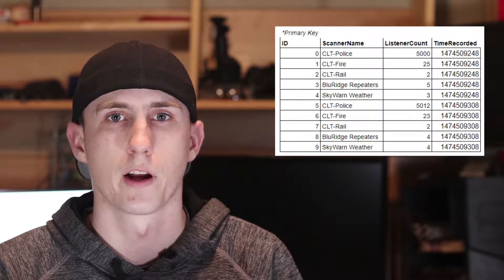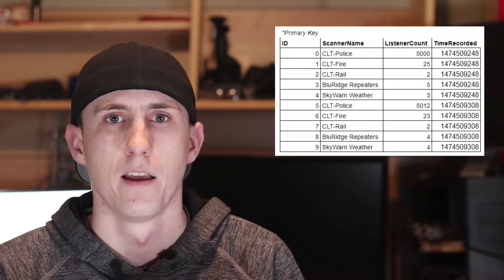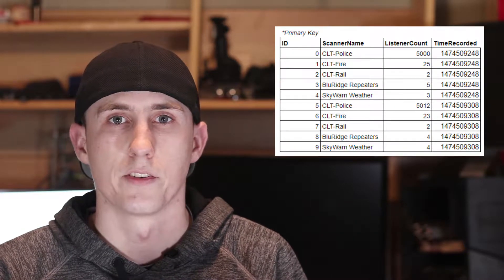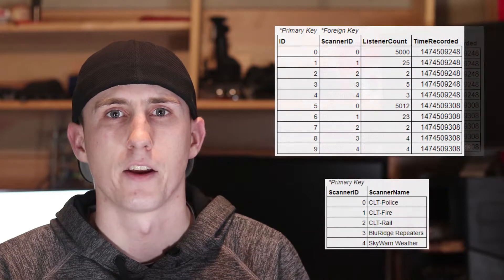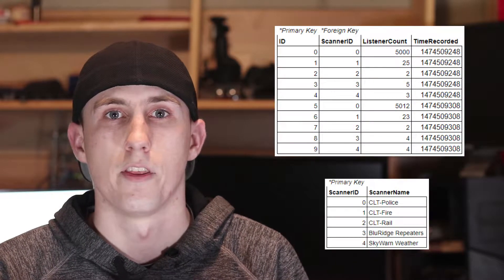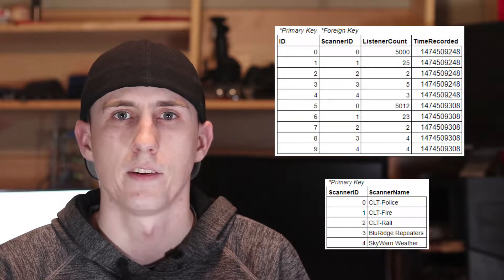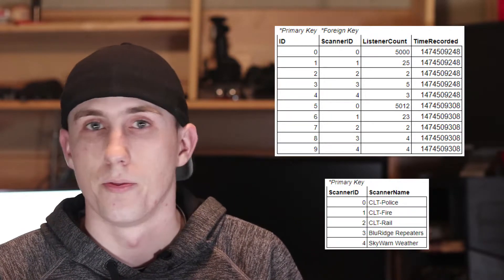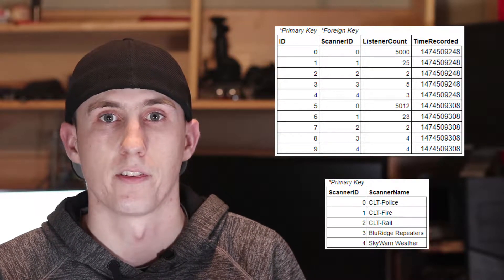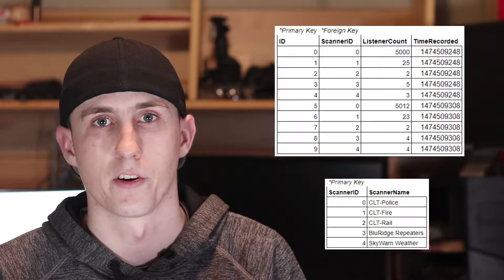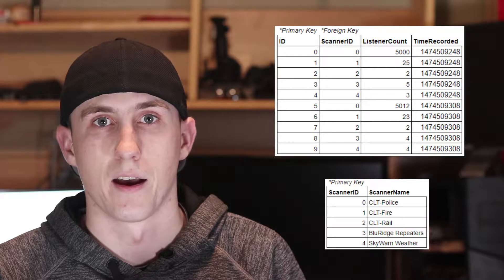The database was super simple — honestly, it was simpler than it should have been. It only had four columns: a primary key ID, the name of the scanner, the number of listeners, and the time recorded. If I'd done it right, I would have also included another table for the scanner names and used a scanner ID column as a foreign key. This would have made the database more space efficient because instead of storing 3,600 15-character varchars each day, it would have recorded five 15-character varchars and then 3,600 integer characters. But the way I did it worked. I want to emphasize the simplicity of the database — always remember KISS: Keep It Simple, Stupid.